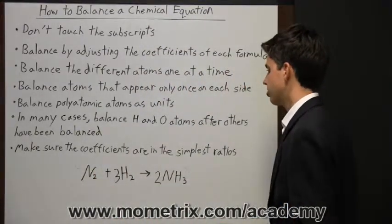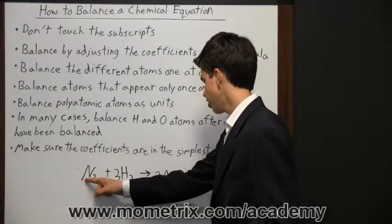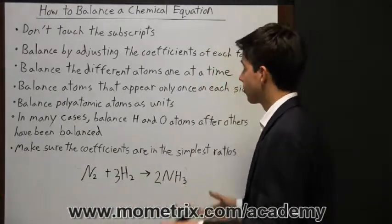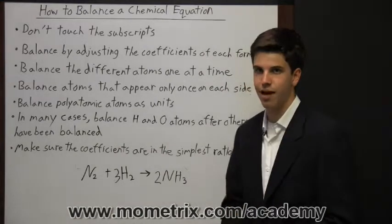Now the important thing to do is go back and check your work. So we have two nitrogen atoms here, two here, we have six here and six here. So this chemical equation is balanced.